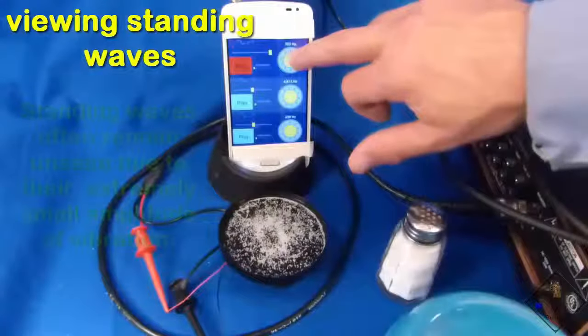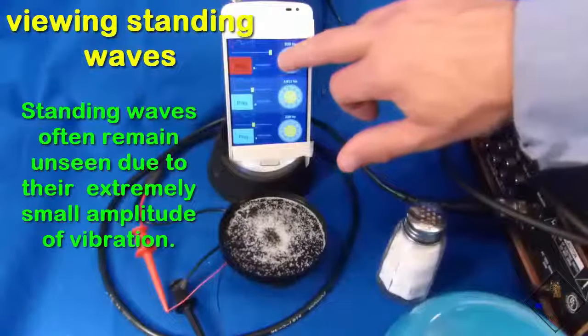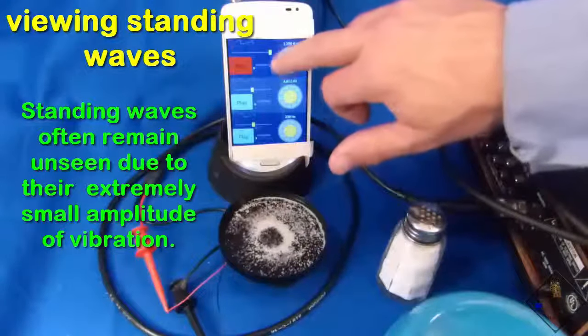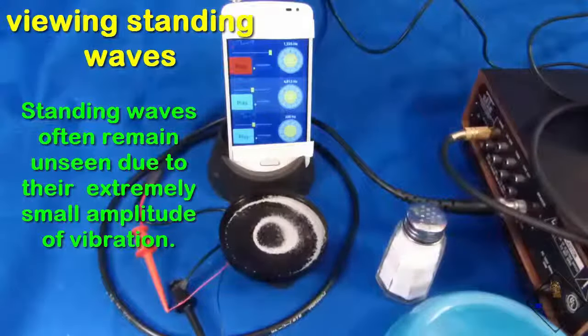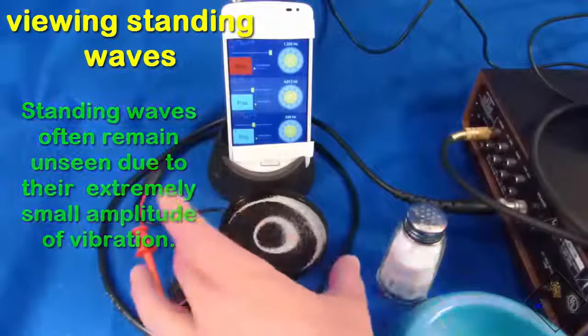Standing waves are difficult to actually see with a metal tube or rod because the amplitude of the oscillation is so small. However, you can actually see standing waves with this activity.